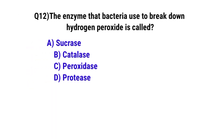Question number 12. The enzyme that bacteria use to break down hydrogen peroxide is called. The correct option is B: catalase.